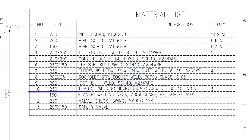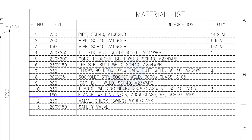Item number 10: 150 NB weld neck flange, class 300 pound, raised face, schedule 40. Quantity 3. Item number 11: 150 NB weld neck flange, class 300 pound, raised face, schedule 40. Quantity 1.